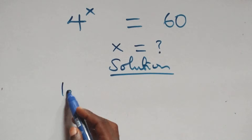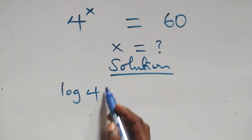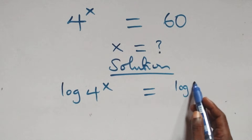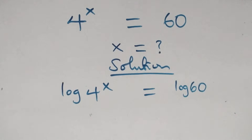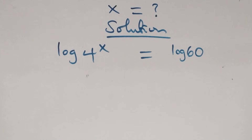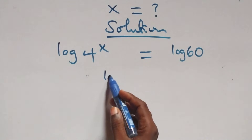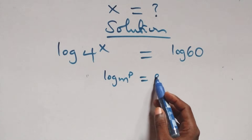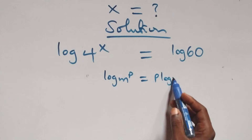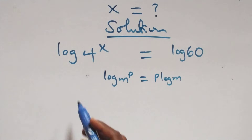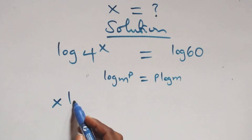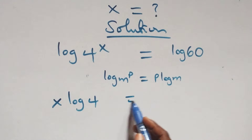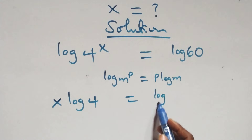We have log of 4 raised to power x equals to log 60. Then, we apply the power rule of logarithm. When we have log n raised to power p, this is the same thing as p·log n. So we have x·log 4 equals to log 60.